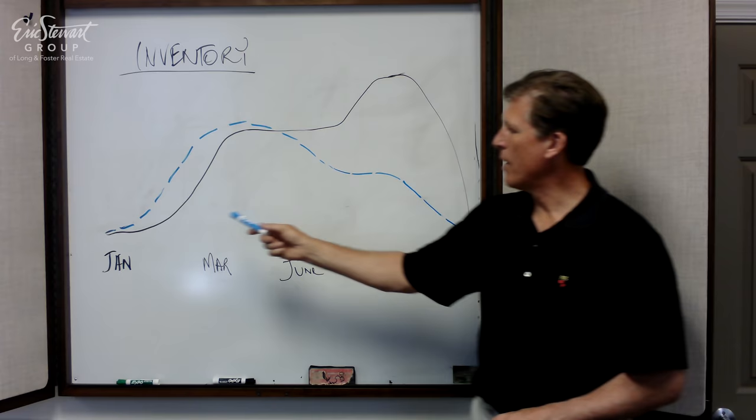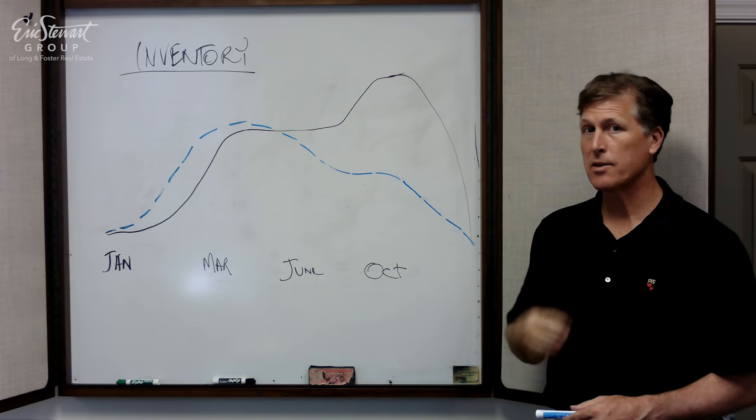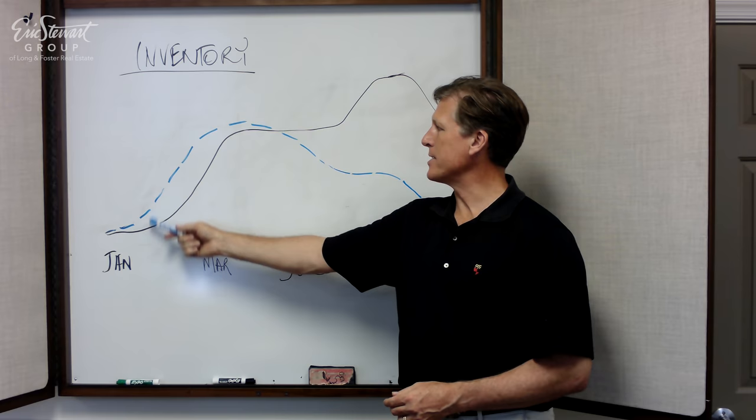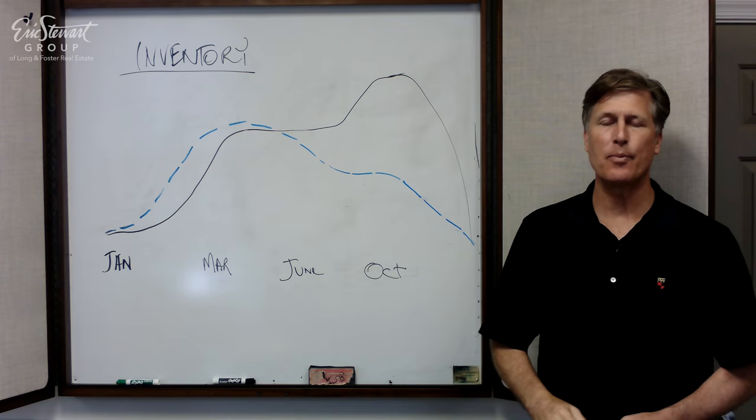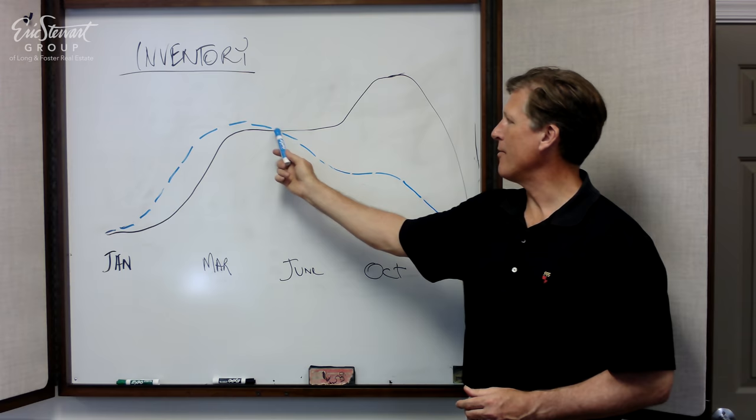The blue line is our number of buyers approximately and what I'm doing is giving you a sense of the overall demand over supply trend where you have more buyers looking in that February time frame up until around the 4th of July, a little before that. The old saying is that when the fireworks go up, the sales come down.